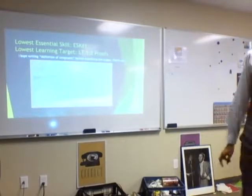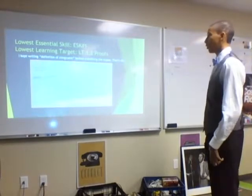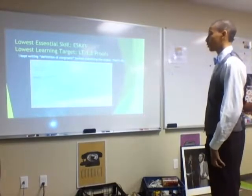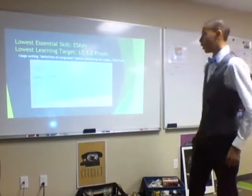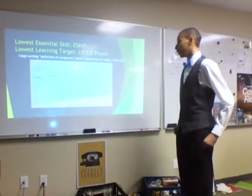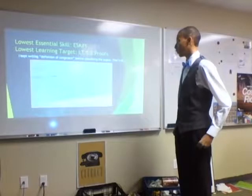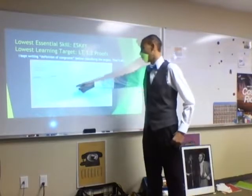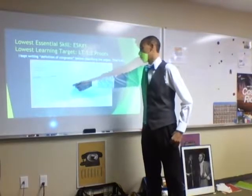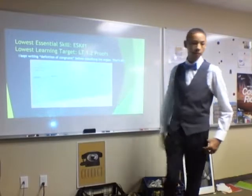My lowest essential skill is essential skill 1, learning target 1.2: proofs. The only issue is I kept writing the definition of congruence before classifying the angles, like right here. Basically, I just have to switch these two steps.